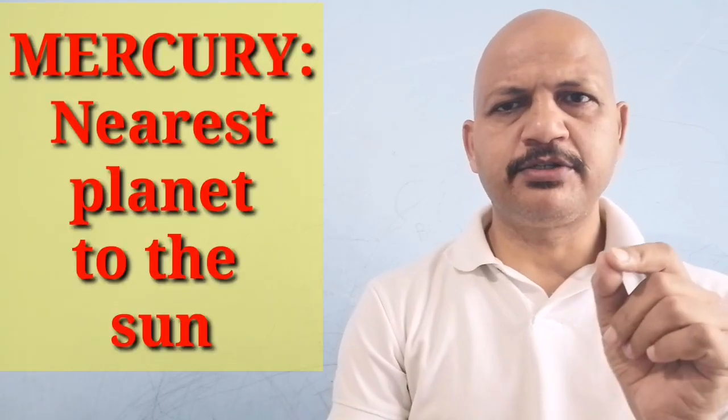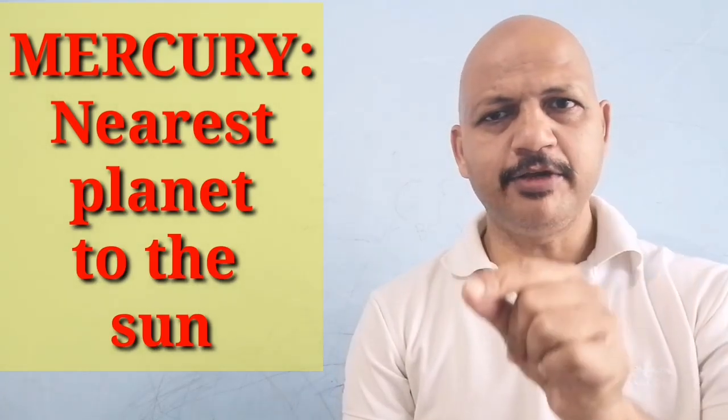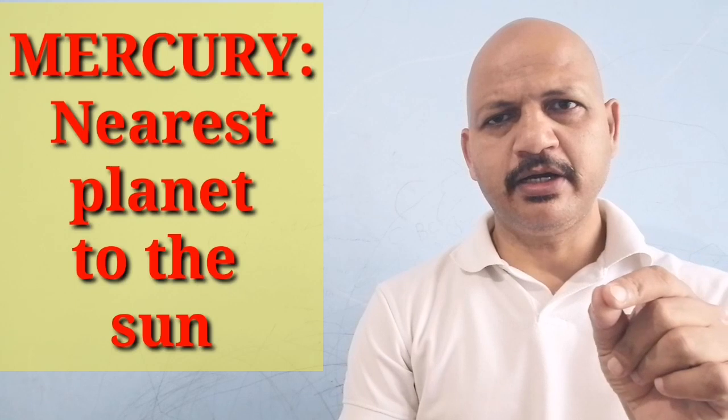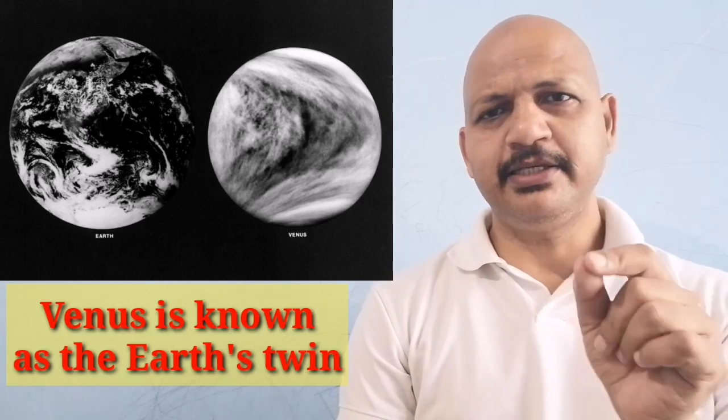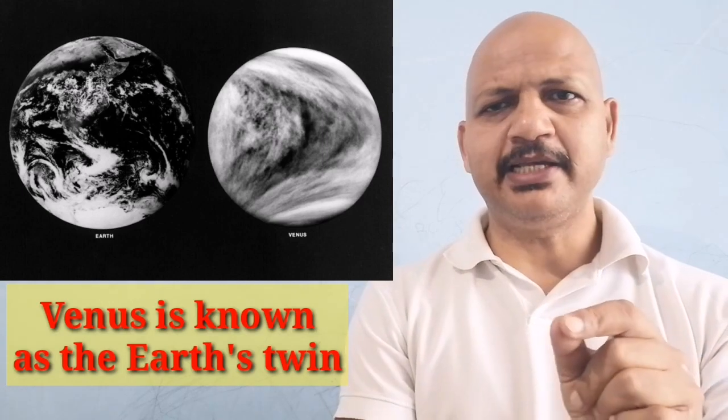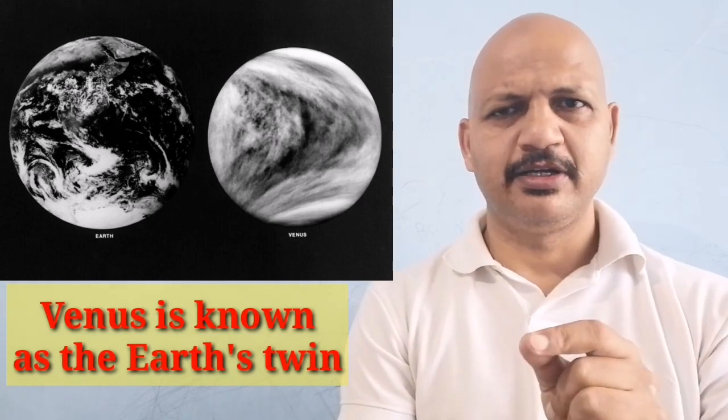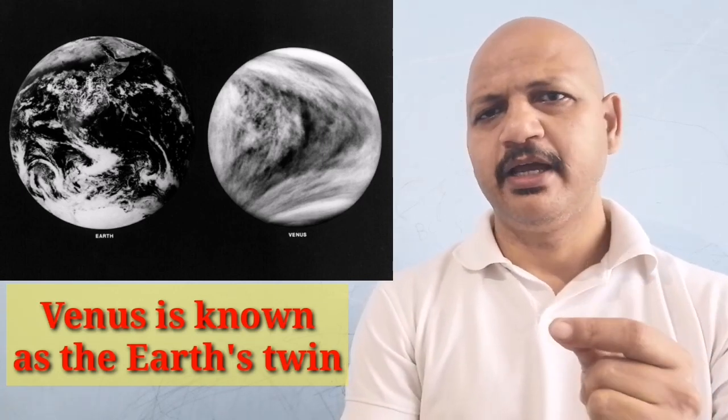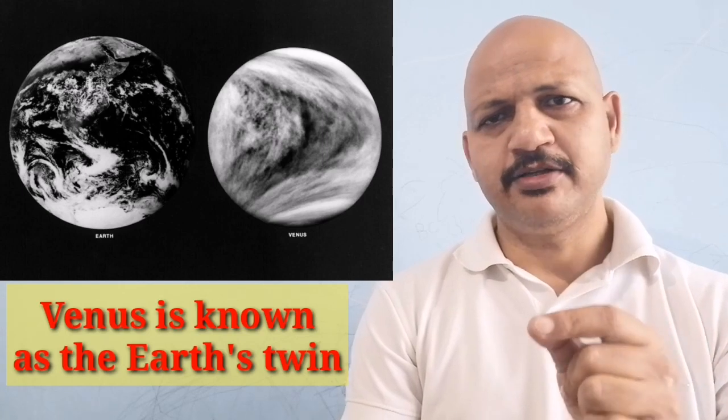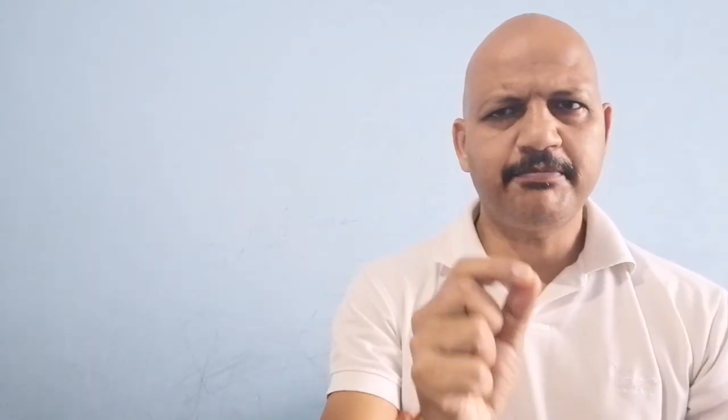Mercury, which is the nearest planet to the sun, takes 88 days to make one revolution. Venus is known as the Earth's twin because its shape and size is similar to that of the Earth.